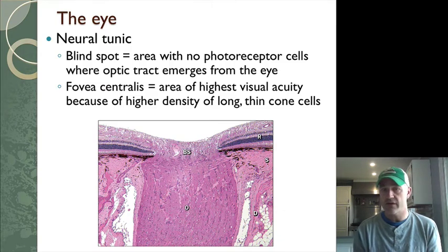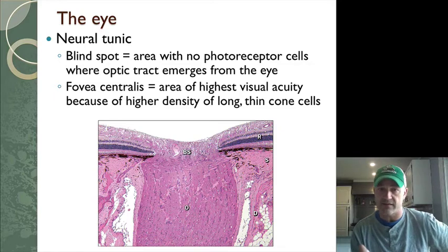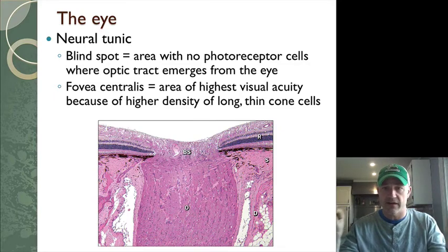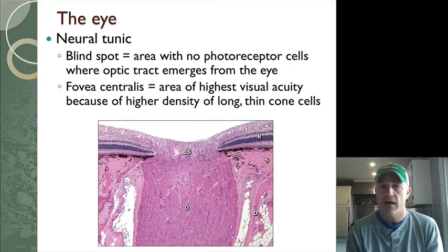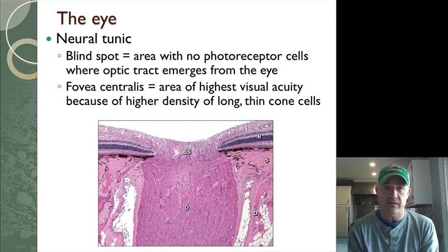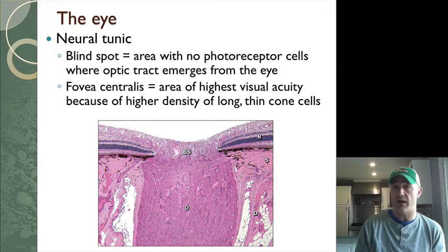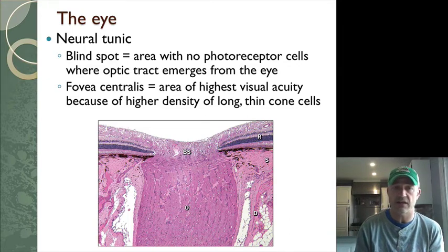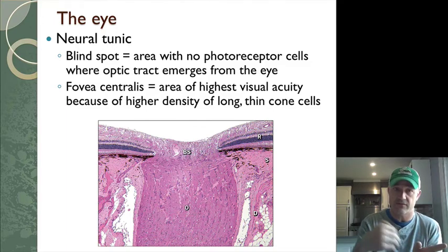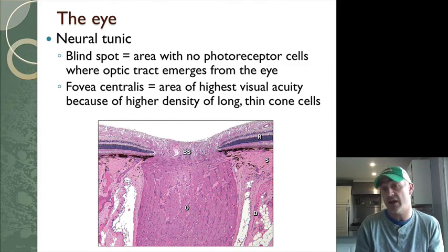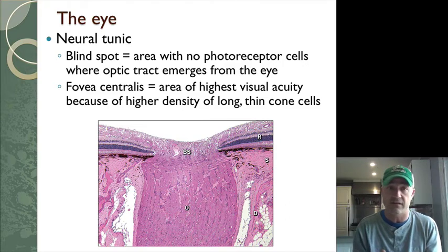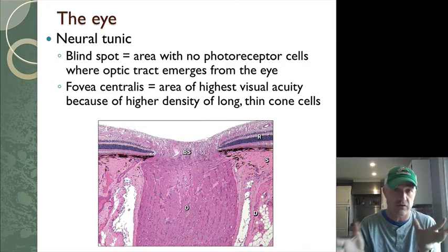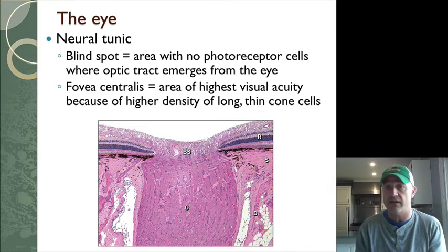Looking where the BS is in the center, you can see layers of nuclei on both sides, and then in the center there's nothing — that is the blind spot. There are no photoreceptors there, which is why it's called the blind spot. If light is focused onto that part, you won't perceive it; your brain fills it in based on what the retina sees in other areas.